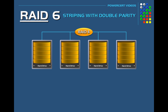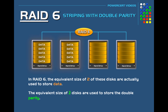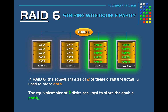In our example here, RAID 6 is using four drives. That means the equivalent of two of these drives would be used for actual data storage, and the equivalent of two disks would be used to store the double parity. So if these disks were one terabyte each, that would equal four terabytes, but only two terabytes would be used to store data and the other two terabytes would be used to store the double parity.